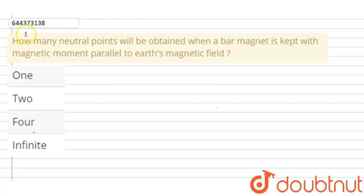Hello everyone, let's start our question. So here is the question: How many neutral points will be obtained when a bar magnet is kept with a magnetic moment parallel to the earth's magnetic field?